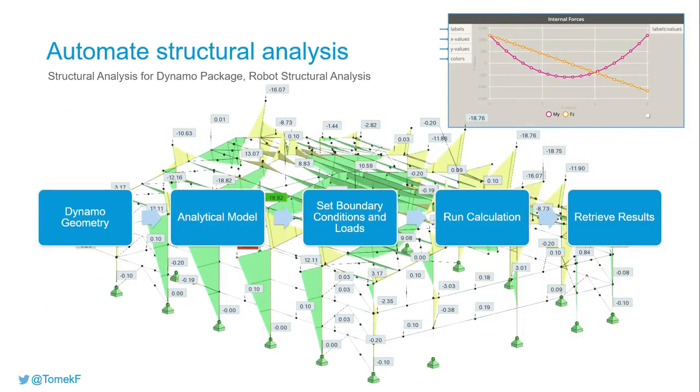This slide shows you a standard process workflow when the package is being used. Based on the Dynamo geometry, structural engineers create an analytical model this time, not the physical like in the Revit case. Actually, in Revit we create both physical and analytical. So here we create only the analytical model. Then we apply section shapes to this model and define boundary conditions such as supports and releases.